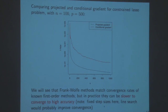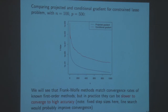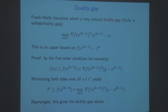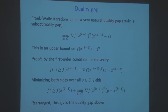I used fixed step sizes here - gamma equals 2 over k plus 1. Line search would help, but I also used a fixed step size for projected gradient. In my experience, if you give them both the ability to do backtracking, the same rough comparison still holds. Before talking about the convergence rate, let's discuss a very important property of Frank-Wolfe iterates: they admit a very natural duality gap - actually a suboptimality gap, but I'm calling it a duality gap for a reason.